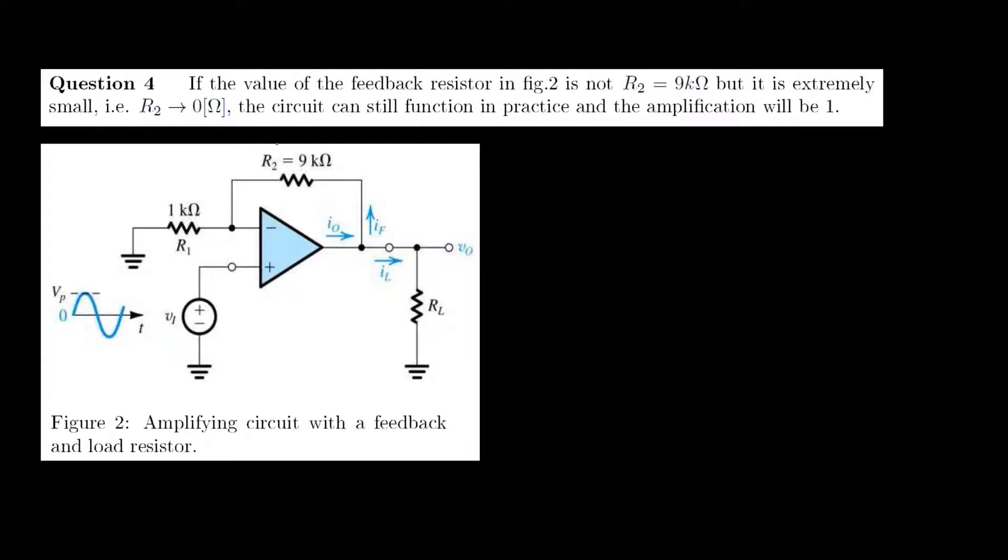This video will discuss the solution to question 4, which is a true-false statement that goes as follows: If the value of the feedback resistor in figure 2 is not R2 = 9 kΩ but is extremely small, i.e., R2 → 0Ω, the circuit can still function in practice and the amplification will be 1.